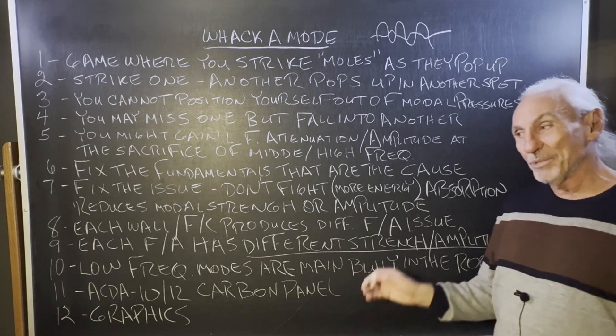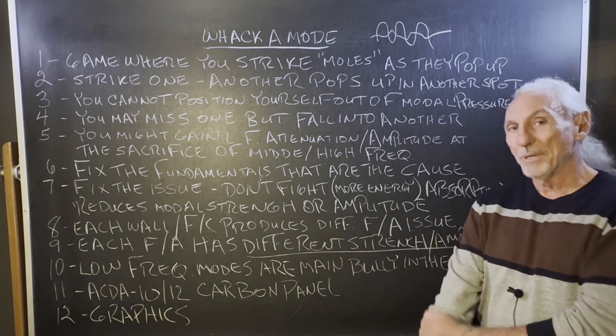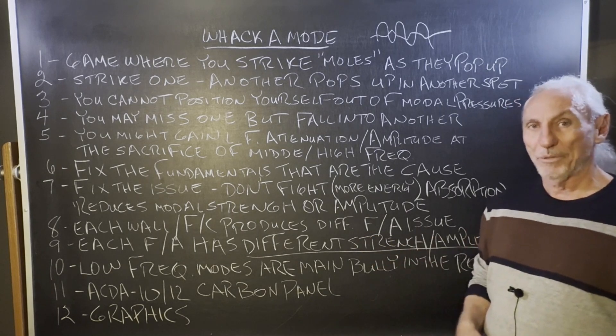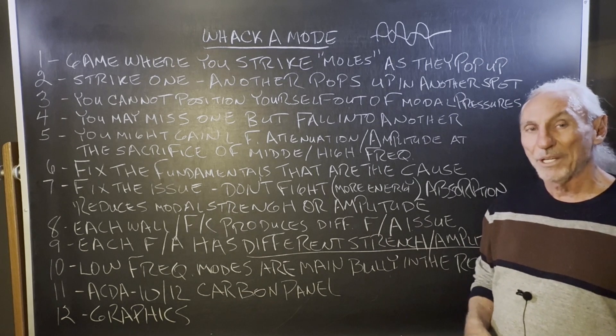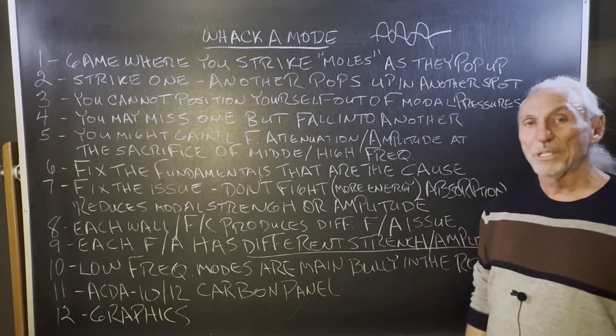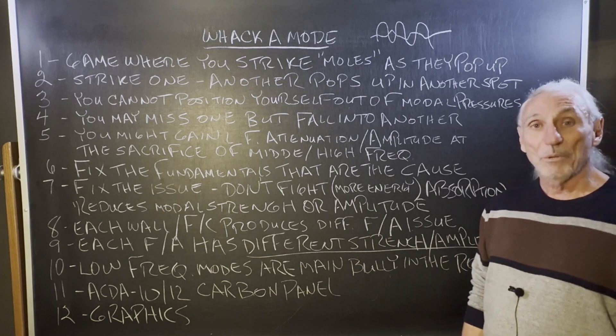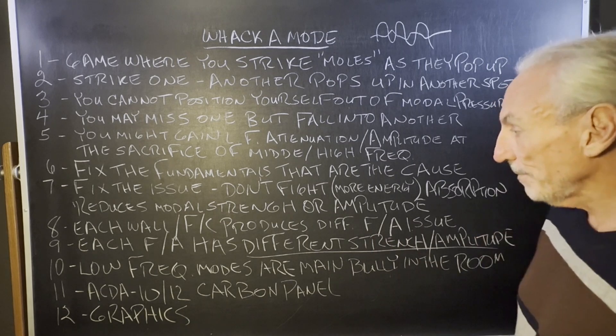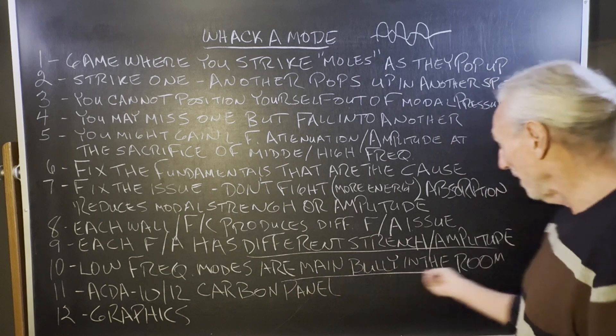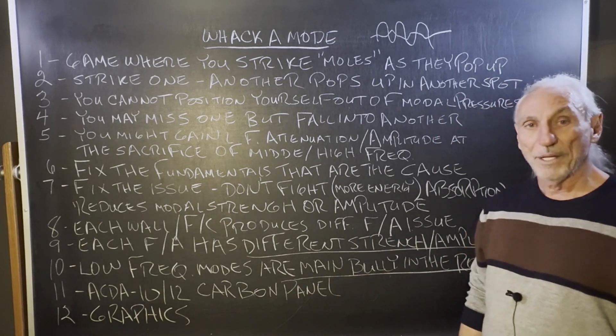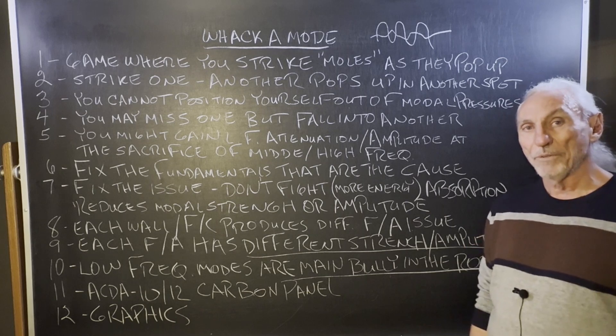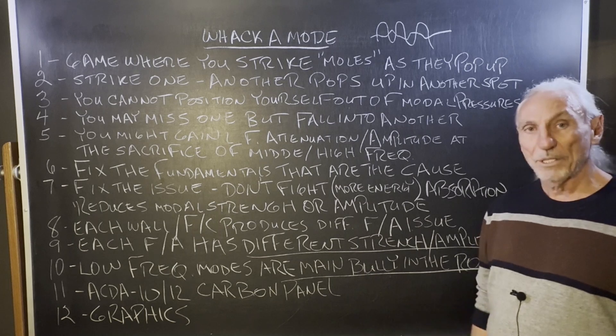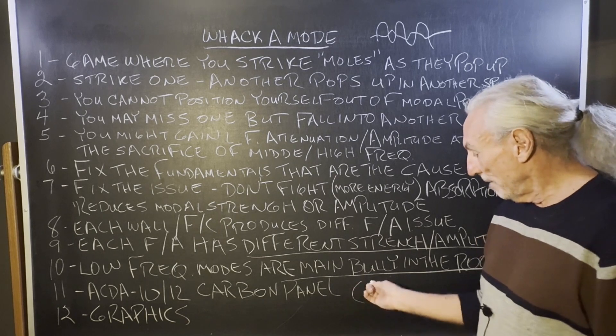Each frequency and amplitude has a different strength on each wall. There lies the problem. So you might need 50 square feet of treatment on this wall at 40 hertz, you may need 80 square feet of treatment on this wall at 30 hertz. We have that data, obviously only on our technology, because we've applied it for years. We know what it's capable of doing and what it's not capable of doing. But it has a pretty wide band range that it works very well in. Low frequency modes are mainly the bully in the room. So go after the low frequency energy. We have two products that can do that. Actually, we have three.